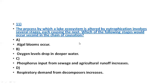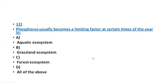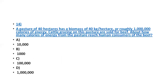The process by which a lake ecosystem is altered by eutrophication involves several stages, each causing the next. Which stage occurs second in the chain of causation? The correct answer is algal bloom. Initially, phosphorus input from sewage and agriculture increases. Then the algal bloom occurs. After that, the respiratory demand from decomposers increases and the oxygen level drops in the deeper water. So algal bloom is the second stage in eutrophication.